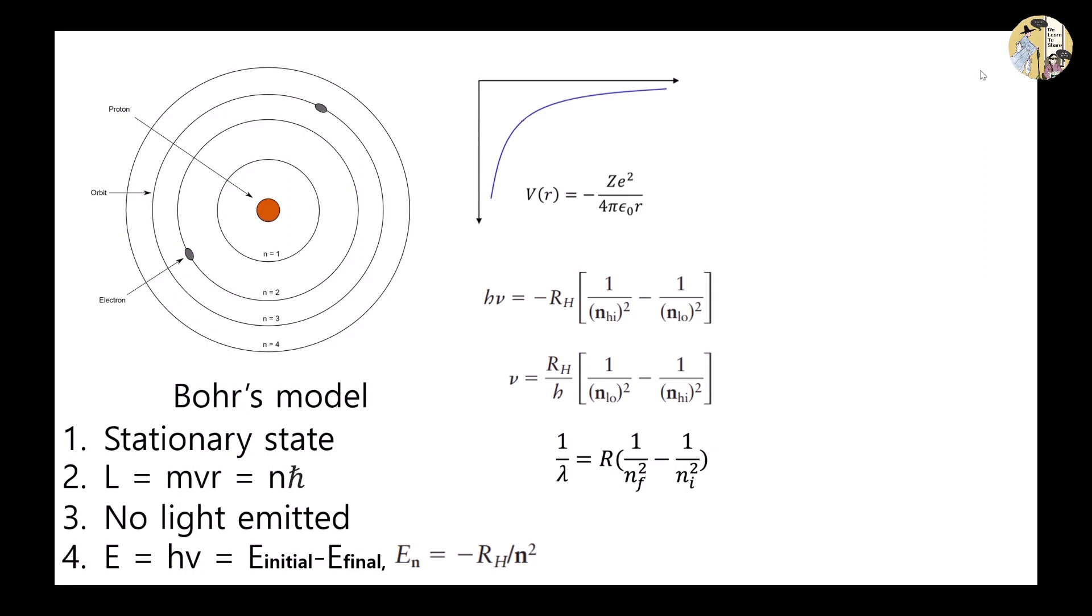The reason why this experimental value was bigger was then revealed. Electrons also have mass, and they actually orbit the center of mass between the electron and proton.